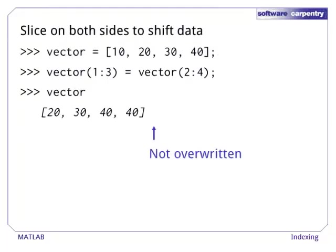An array slice makes a copy of the underlying array, which means that the data values are copied to a new location and subsequent updates do not change the original matrix. Slicing on both sides of a statement gives us a way to shift data along the axes. If vector is a one-dimensional array, then vector(1:3) selects slots 1, 2, and 3, while vector(2:4) selects the values in slots 2, 3, and 4. Doing the assignment overwrites the lower three values, but it leaves the uppermost untouched.